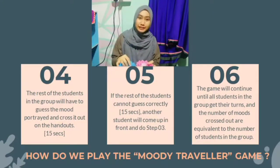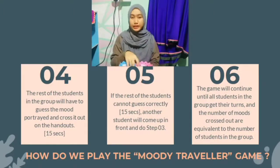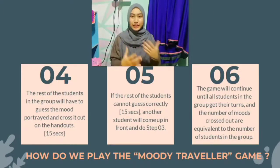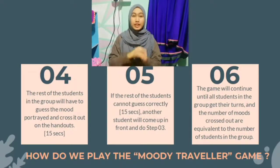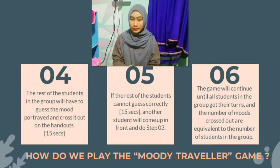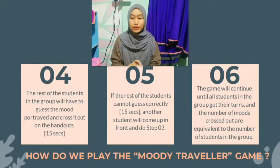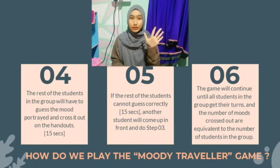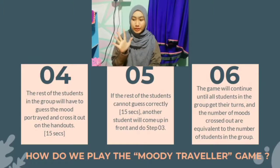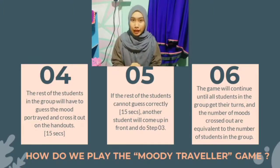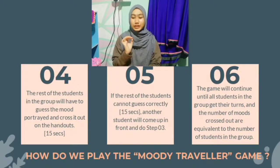You pick a sentence and then you pick a mood, and then you have to say it with the help of intonation, facial expression, movement, and gestures. This continues until all students in the group get their turns and the moods crossed out in the puzzle handouts are equivalent to the number of students in the group. For example, if there are 5 students in a group, there should be 5 words crossed in the word puzzle handouts — 5 moods guessed correctly.